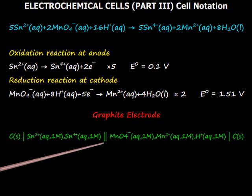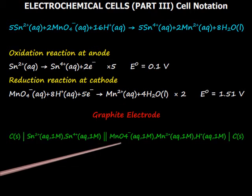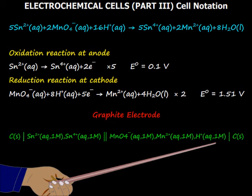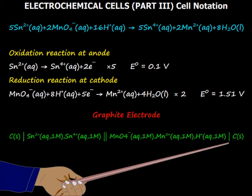Then a double vertical line for salt bridge. Then we write aqueous phase ions of the cathode compartment in the same way. Then again we indicate the cathode graphite electrode after a single vertical line.